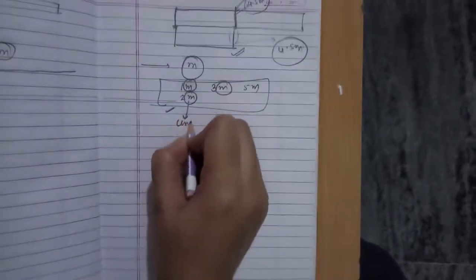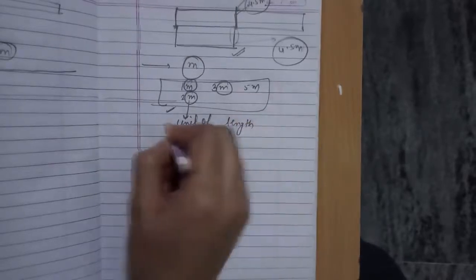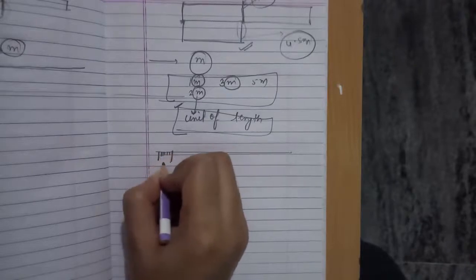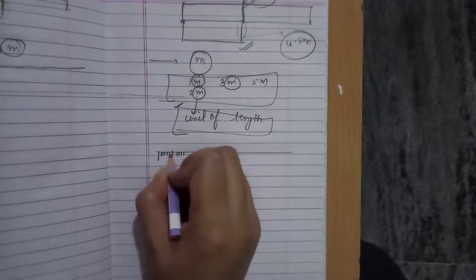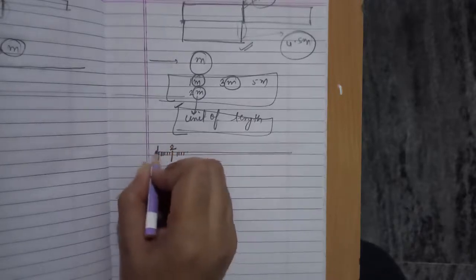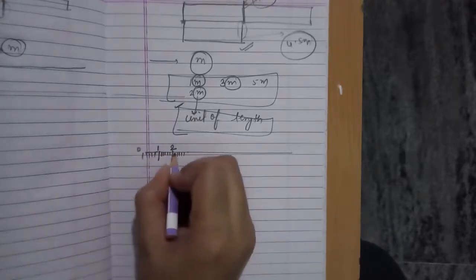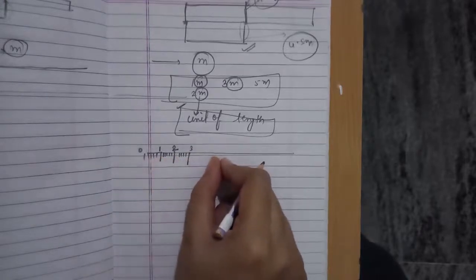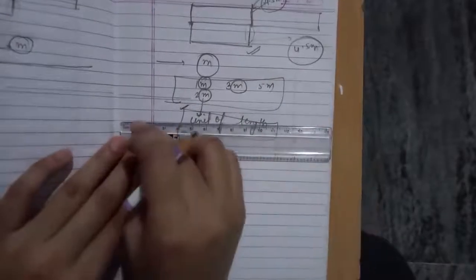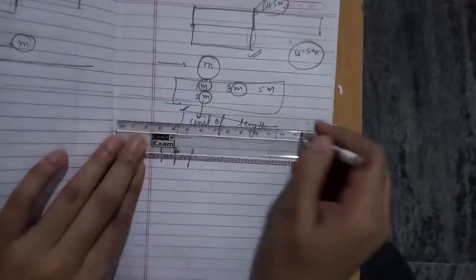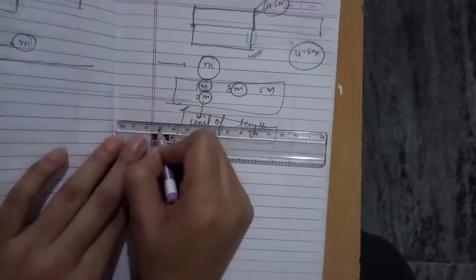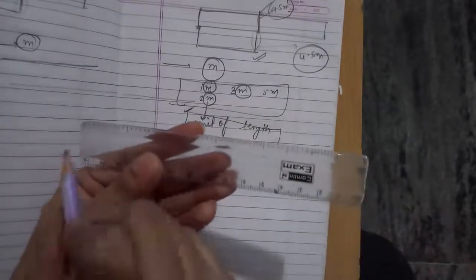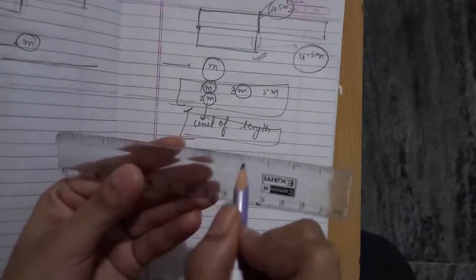Meter is a unit of length. The scale that we use to measure length has meter and centimeter values written on it — for example, 1 centimeter, 2 centimeter, 3 centimeter. This is our scale, and the lines on one side show centimeter values: 1 centimeter, 2 centimeter, 3 centimeter, 4 centimeter. On the other side, the values show meters: 1 meter, 2 meter, 3 meter, 4 meter. This is a 6-meter scale.